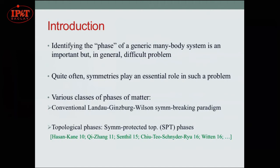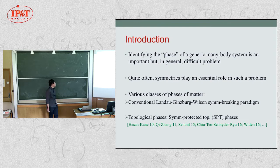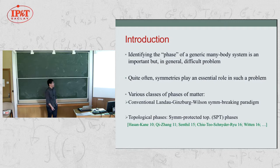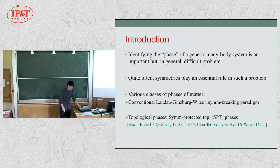Associated with the idea of symmetries, there are various classes of matter. The first and most famous kind: phases can be classified or characterized by patterns of symmetry breaking — the so-called Landau-Ginzburg-Wilson paradigm. We can use local order parameters to characterize a phase. For example, the SO(3) order parameter for a magnetic system or the U(1) order parameter for a superconducting system, giving ordered and disordered phases.